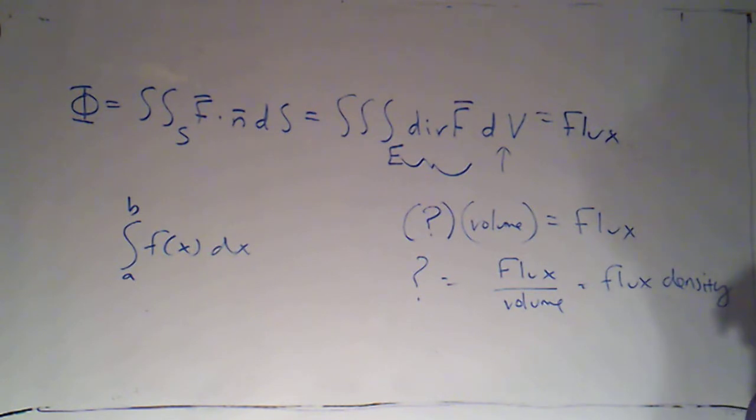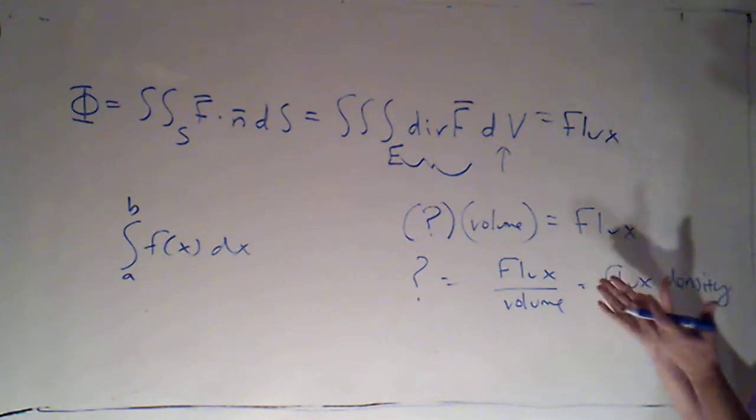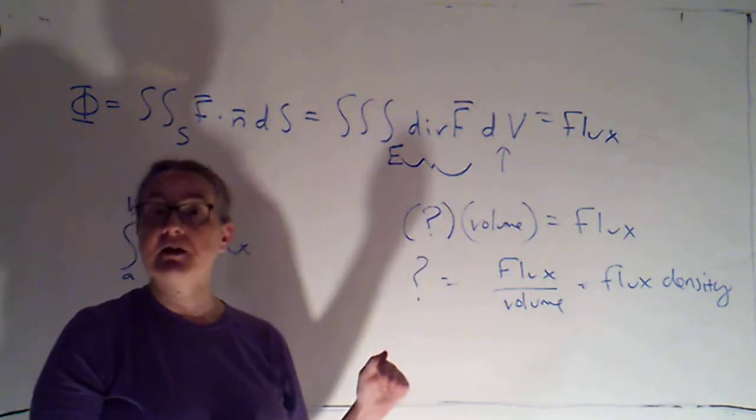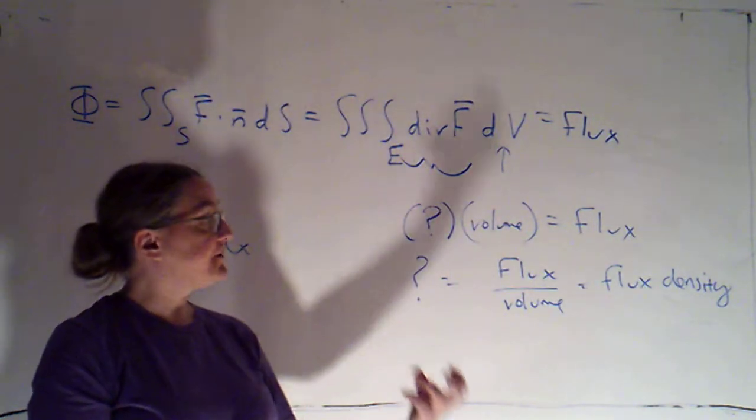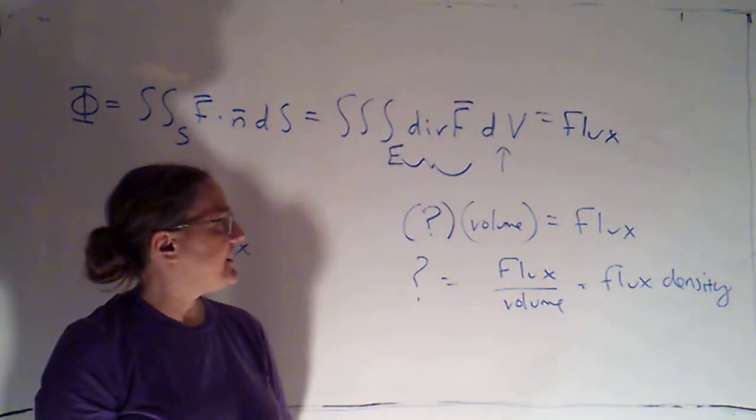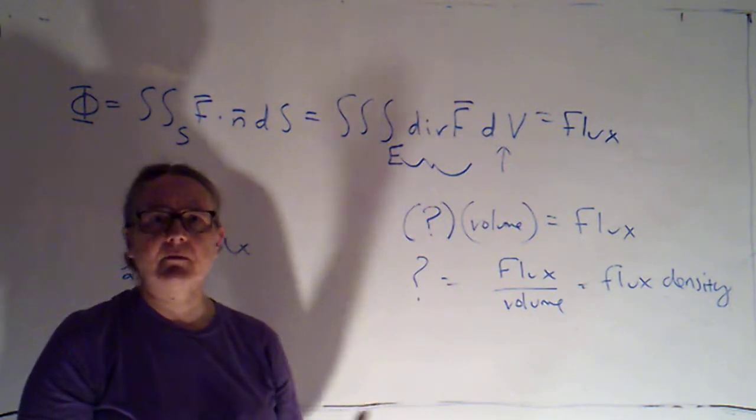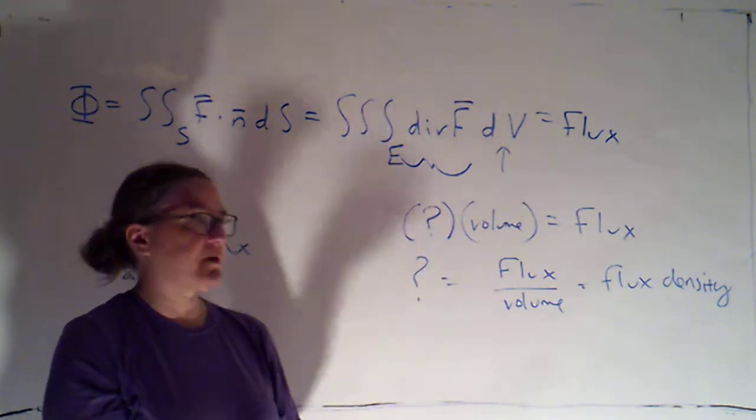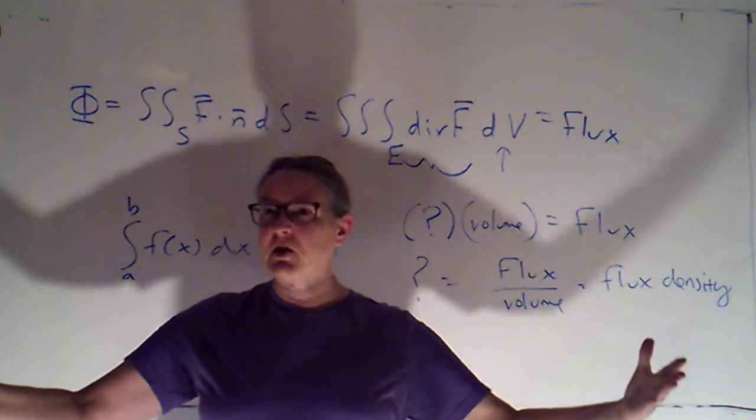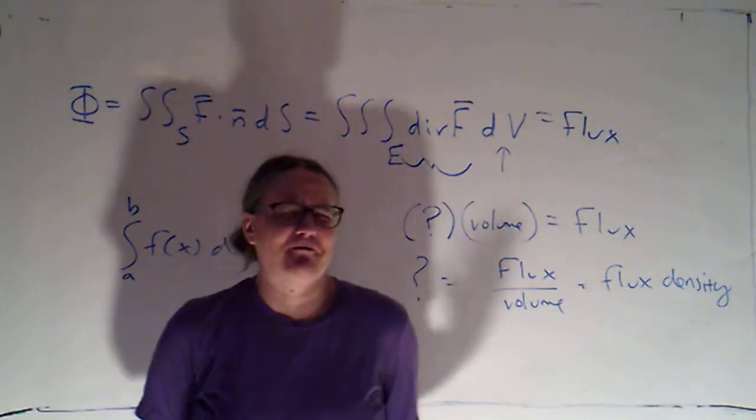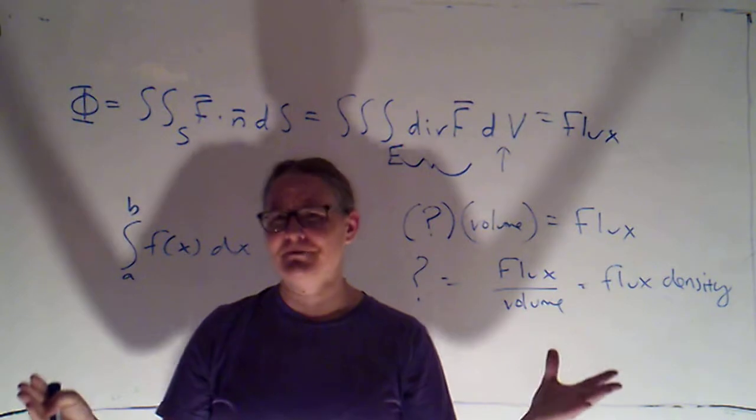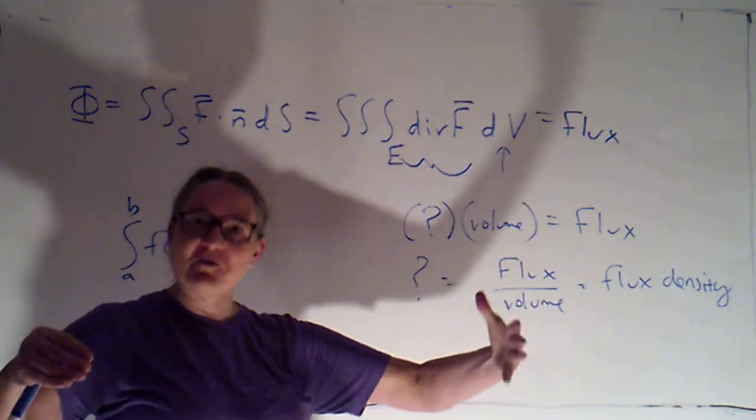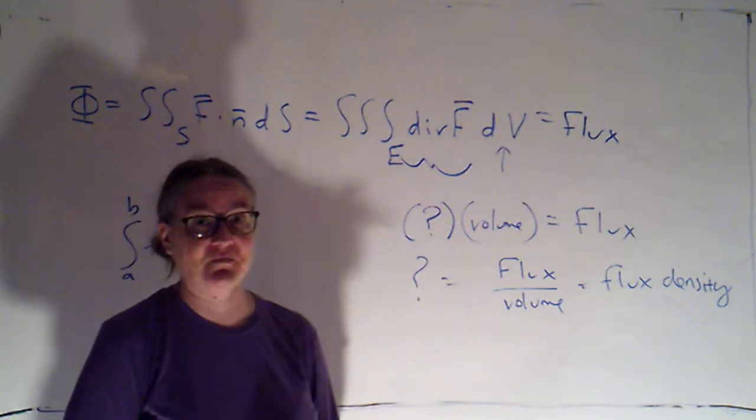So if I think of flux as, if we think in terms of fluid flow, it was the mass per unit of time that was flowing through a surface. Well, if I had one kilogram per unit of time flowing through some surface that was the boundary of something like the surface of the earth, one kilogram of mass flowing through the surface of the earth is minuscule because the volume of the enclosed solid, the volume of the earth is huge.